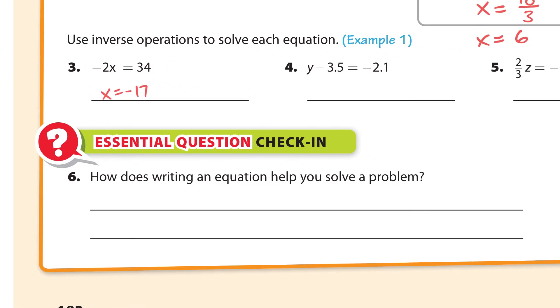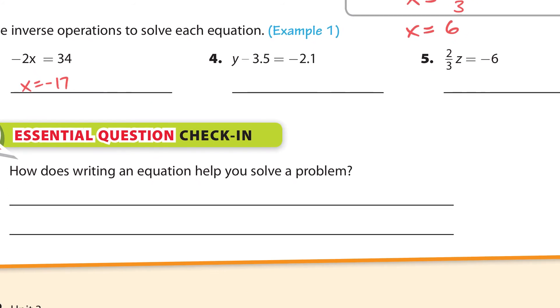Next, number 4. We have this. I'm going to squeeze this in over here. We have y minus 3.5 is equal to negative 2.1. And the operation I see with the variable is subtraction, so the inverse is addition. So I add 3.5 to both sides of the equal sign. Y equals. And once again, these are different signs here. You have to subtract them. And you've got to make sure that the 3.5, the bigger number, is on top. Minus 2.1. That's 4. This is 1. So it's 1.4. And it's positive because we have more positives than negatives. So y is equal to 1.4.